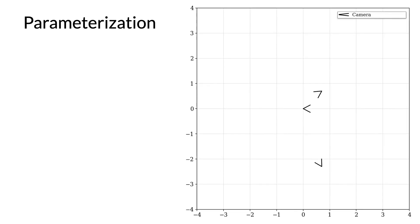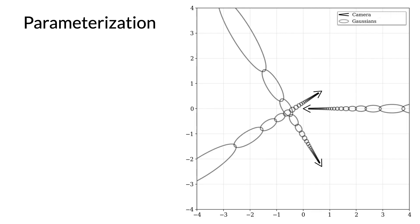Let's talk about that first problem of parameterization. Here we have a toy flatland scene with three cameras. In MIPNERF, these cameras cast Gaussians out into the scene, and in large scenes this results in Gaussians that are very far away from the camera and very elongated. This is a problem for MIPNERF, which requires a bounded coordinate space and works best when Gaussians are somewhat isotropic.